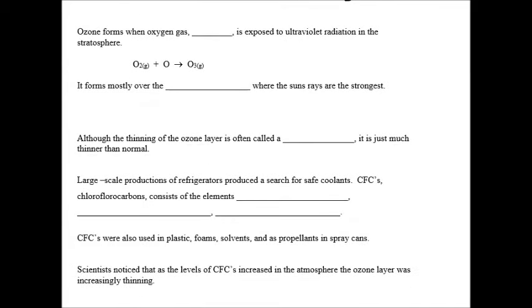Ozone forms when oxygen gas, which is O2, is exposed to ultraviolet radiation in the stratosphere. O2 is what we call a molecule because it is two nonmetals combined.